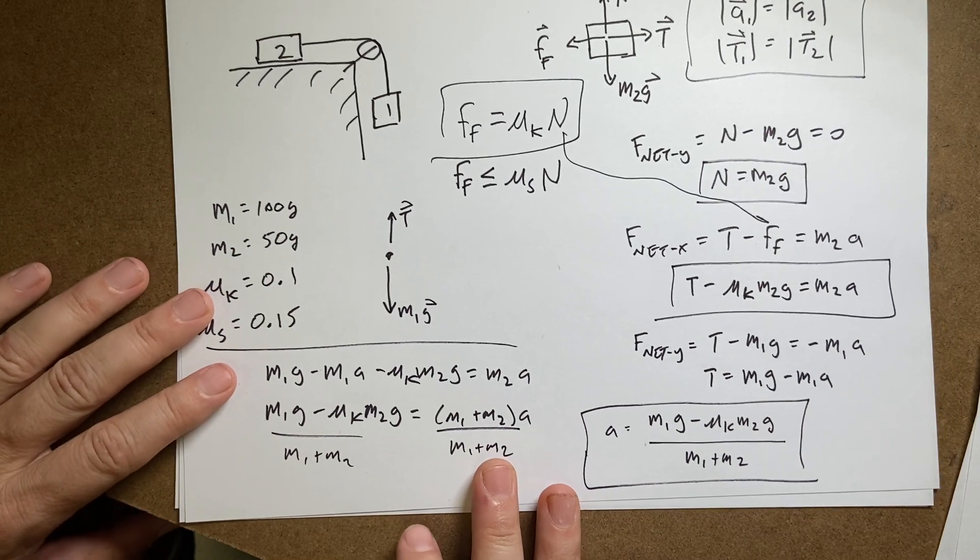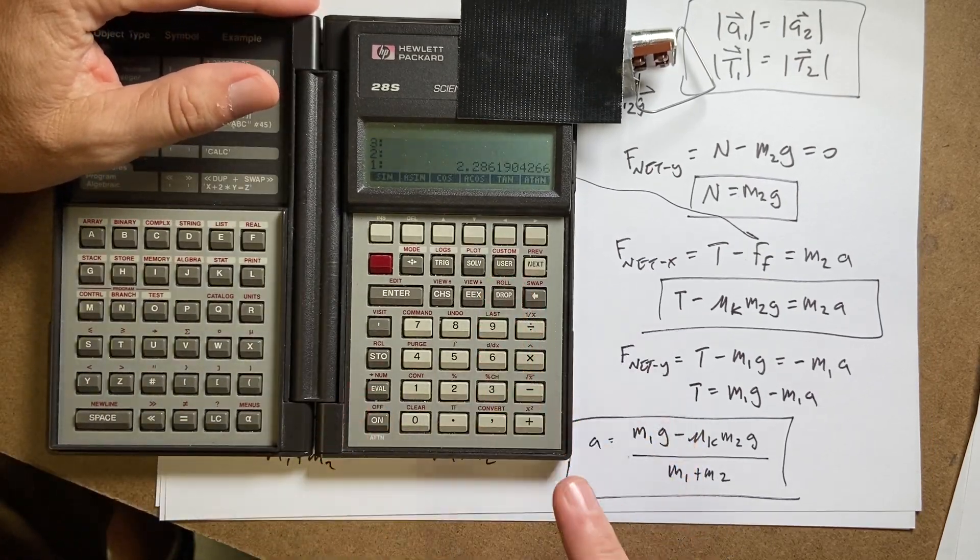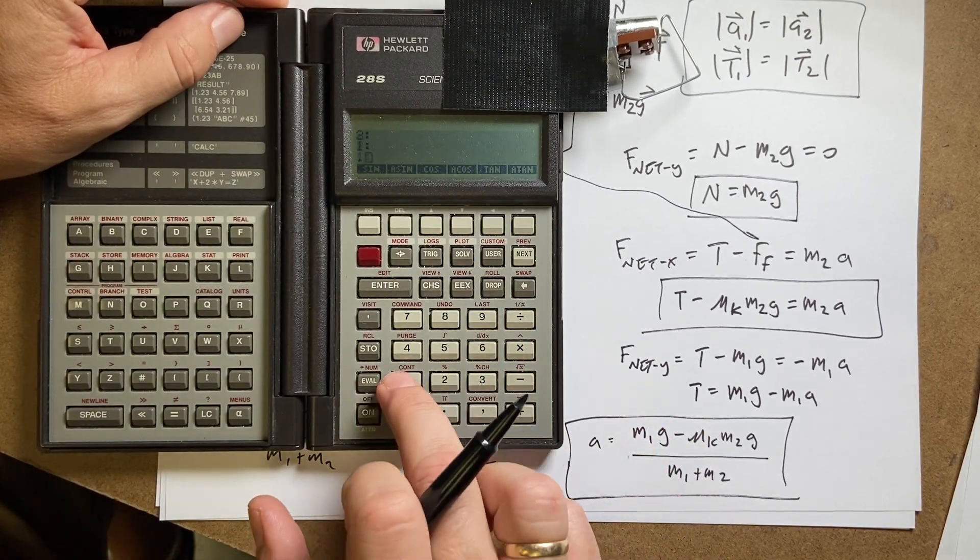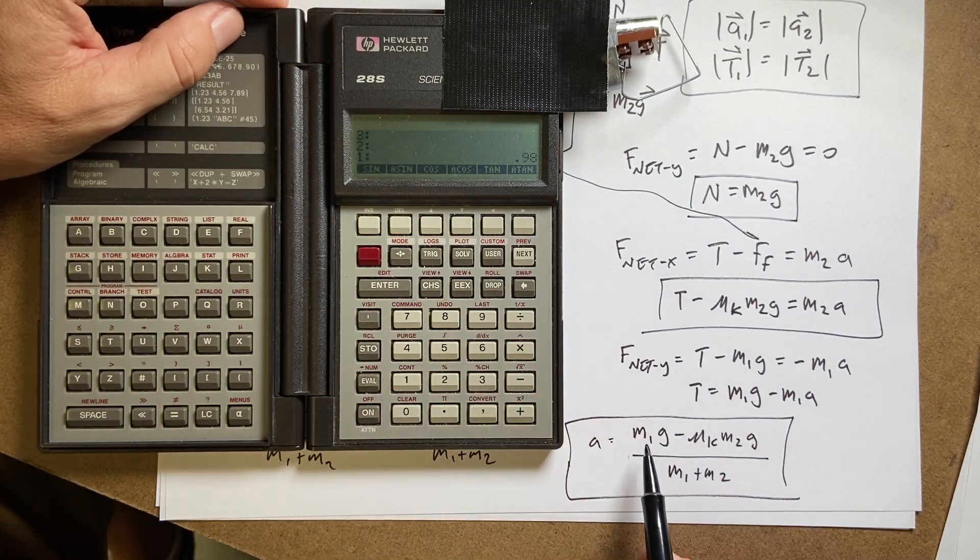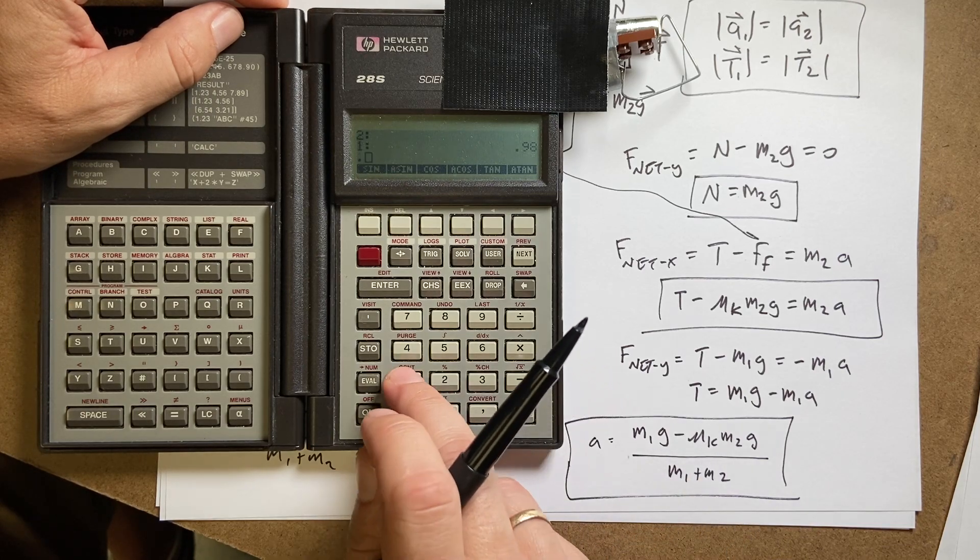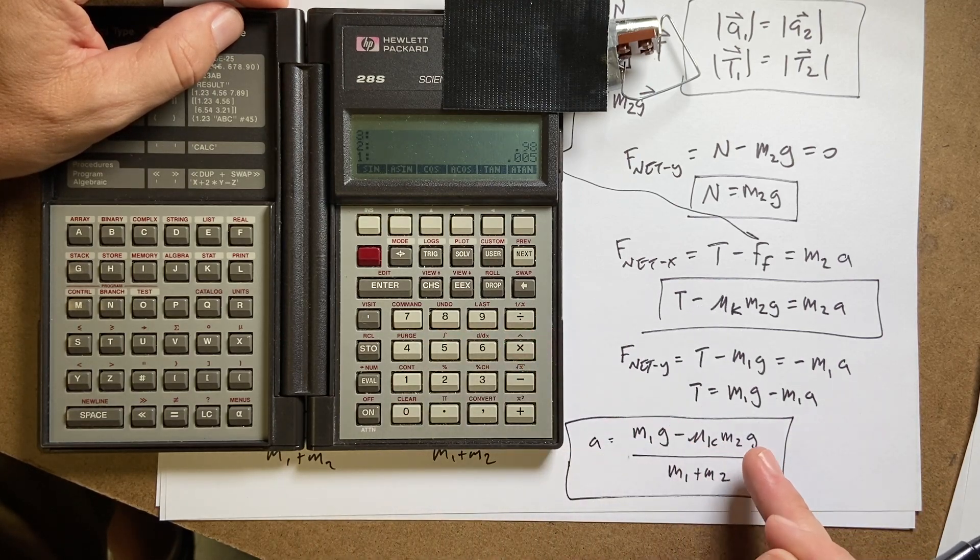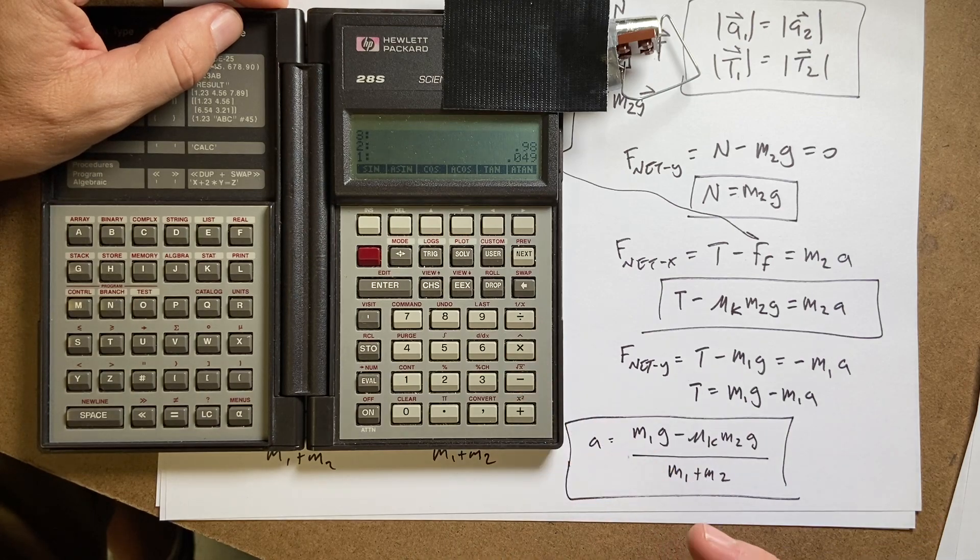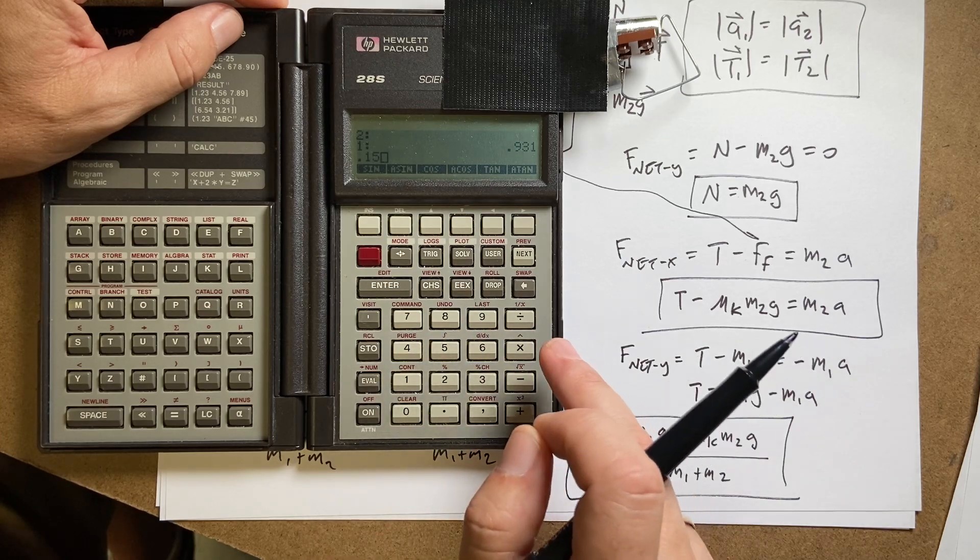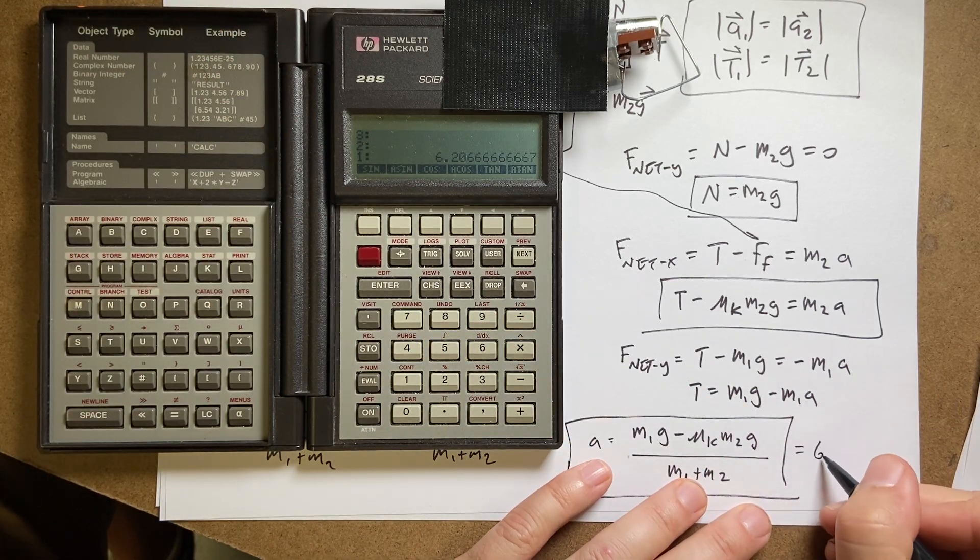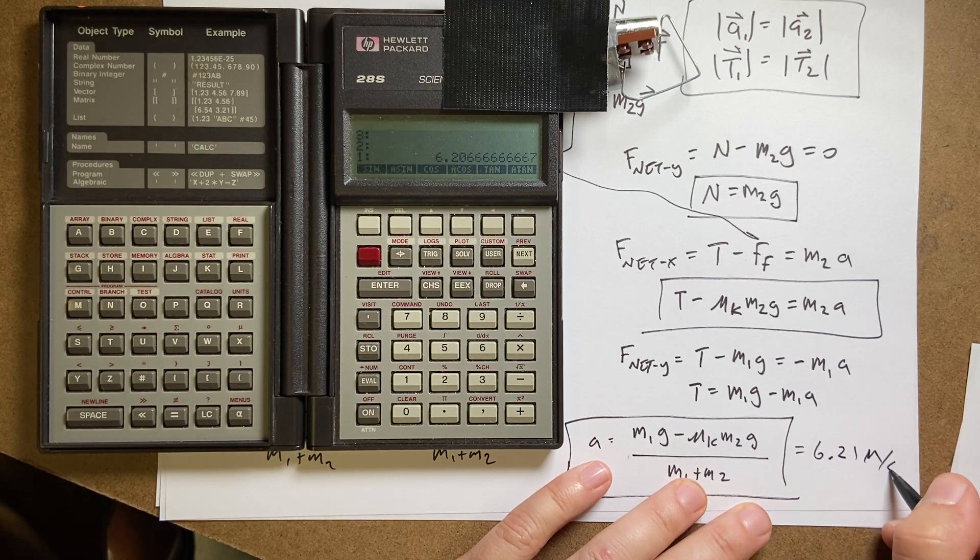Now we may have a problem here. Let me just put in my values and see what happens. I'm going to turn on my calculator. So I had M1 is 0.1, times 9.8. Now mu_K was 0.1. M2 is 0.05 times 9.8. And then I'm going to subtract that. Then I'm going to divide by M1 plus M2 which is 0.15. And I got 6.21 meters per second squared.